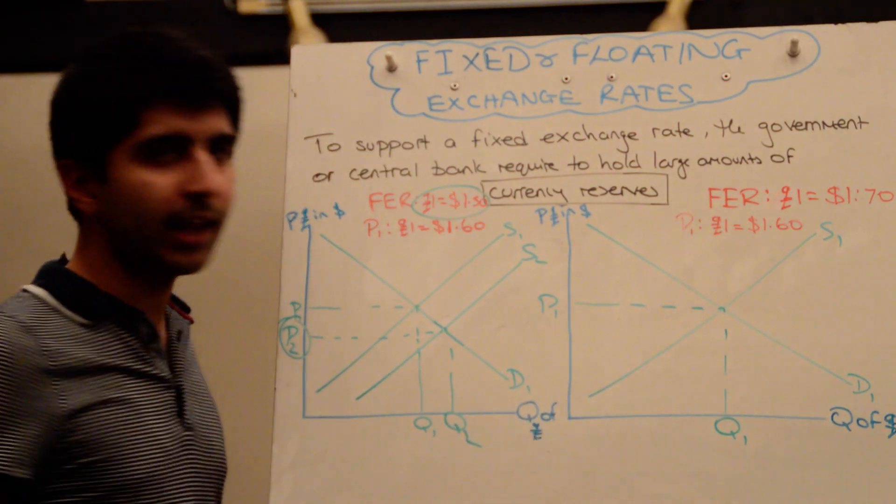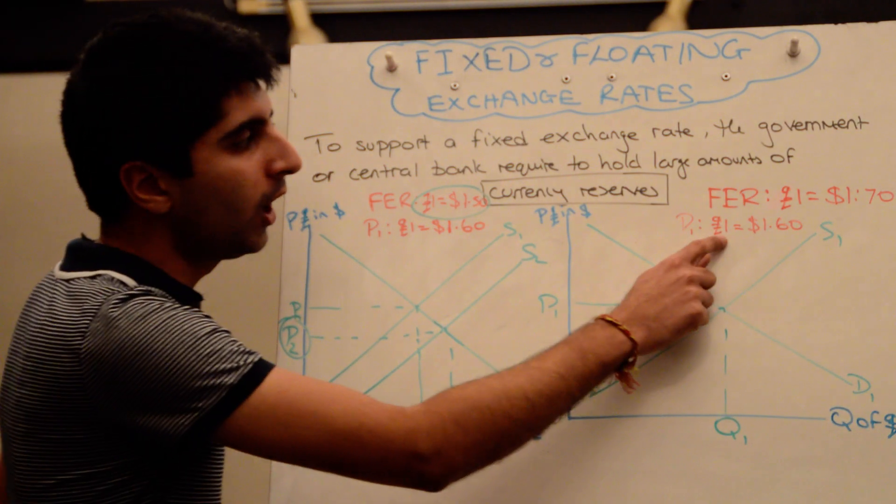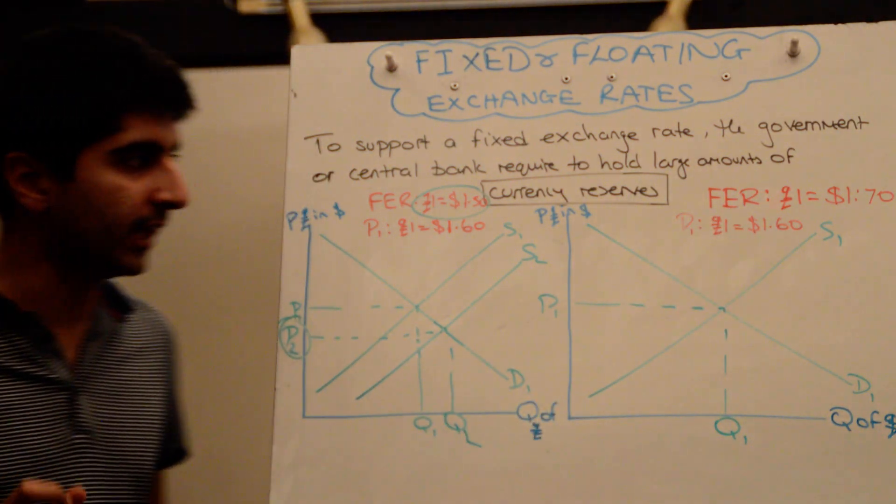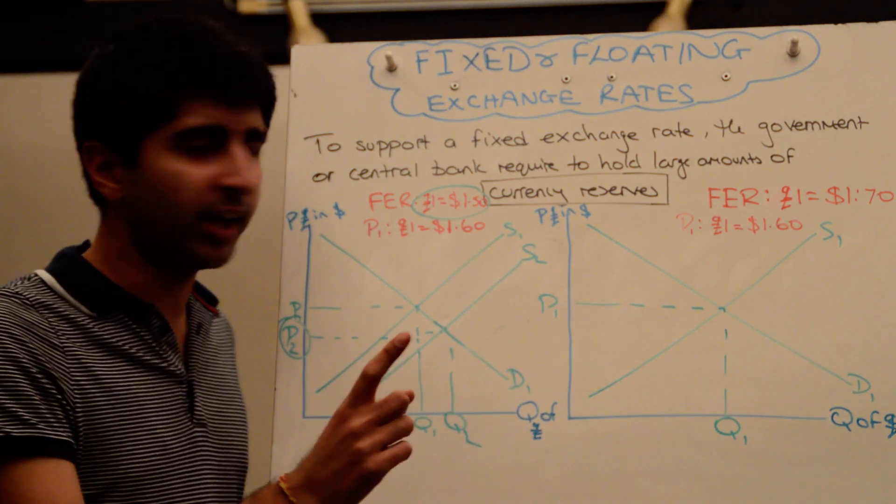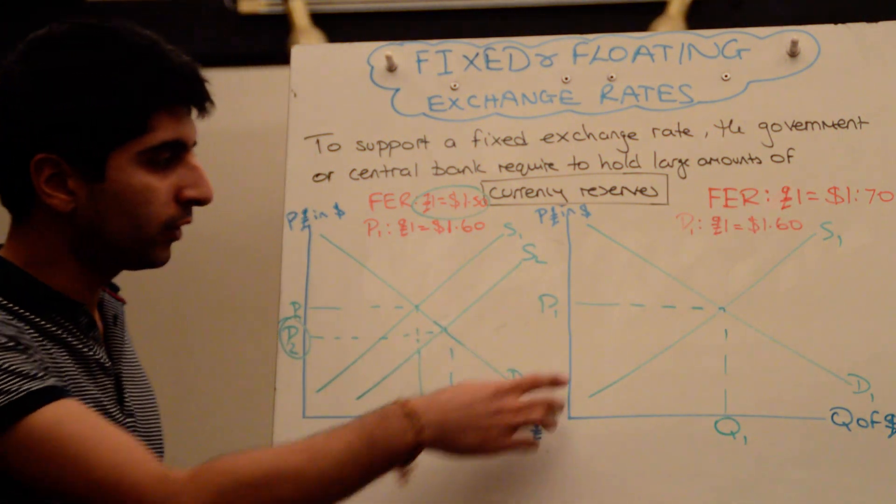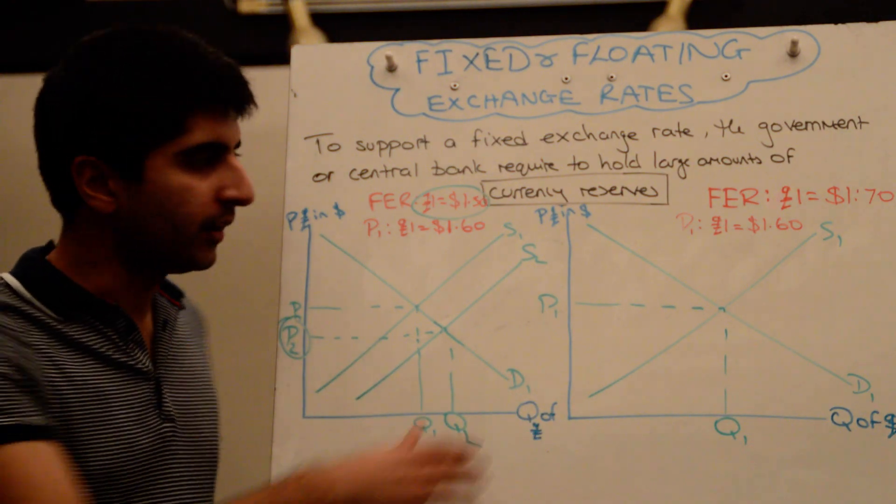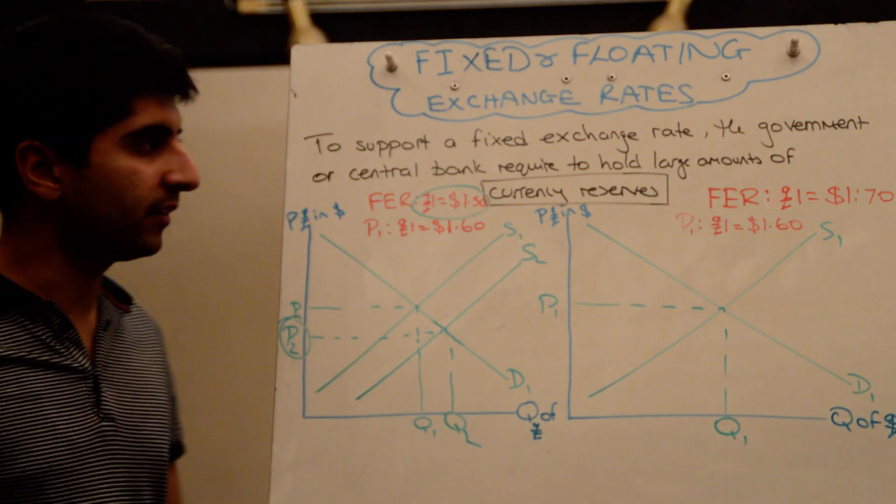What about on the right here? Again, let's say the initial equilibrium is showing an exchange rate, the pound, where one pound can buy with $1.60. Let's say, however, the fixed exchange rate is actually higher than that. So, at the moment, the pound is undervalued, it's depreciated, compared to the fixed exchange rate.